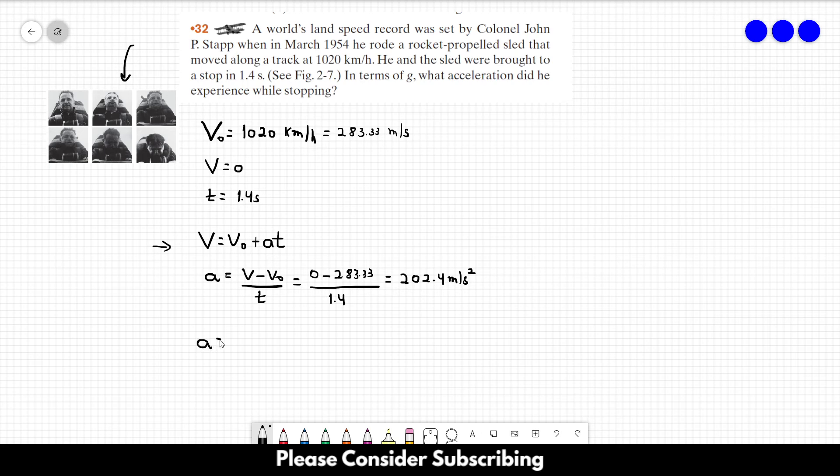And how we do that? We just divide it by 9.8. So the acceleration is equal to 202.4 and we want to divide it by 9.8. And 9.8 is just G. So this is equal to 1. This term here is equal to 1.